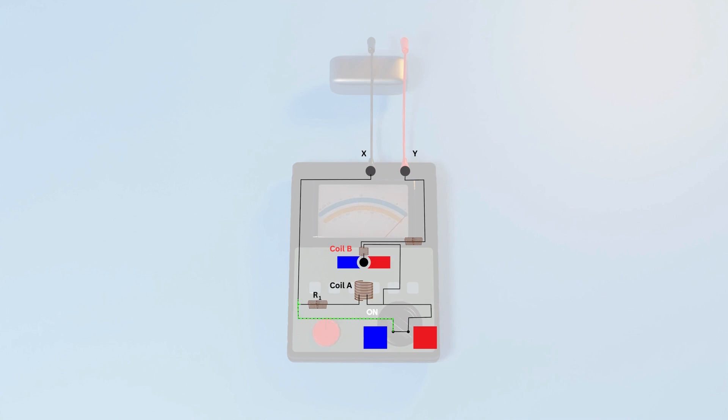While testing, the terminals X and Y are connected across the terminal and body of the machine for measurement. Now, the current passes through the deflecting coil B. The deflecting torque produced by coil B interacts with the torque of coil A and rotates the moving element to indicate the resistance value.